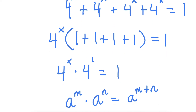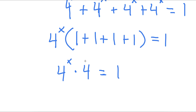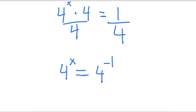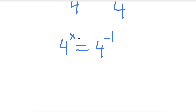Another method we could have used: we have 4 to the power of x times 4 equals 1, so we could divide both sides by 4. That gives 4 to the power of x equals 1 fourth, which is the same as 4 to the power of negative 1. Since a to the power of m equals a to the power of n means m equals n, we get x equals negative 1.